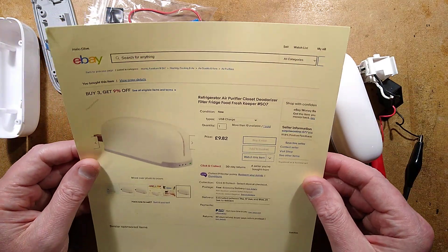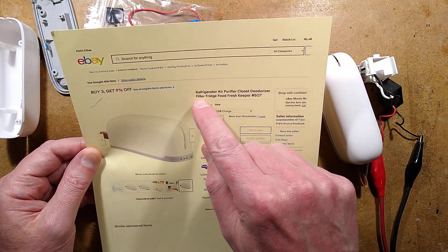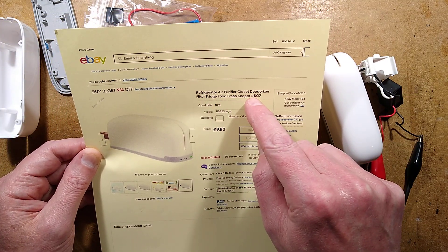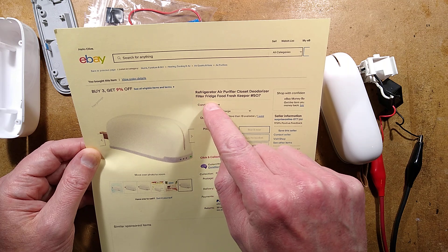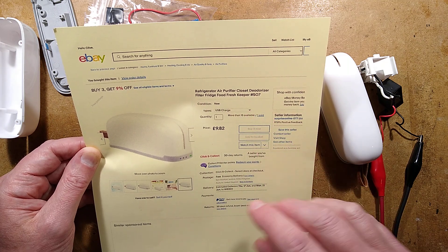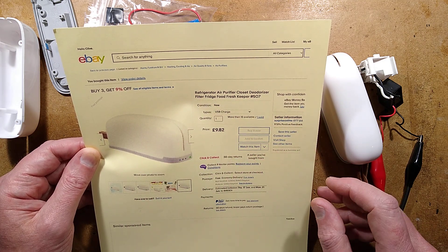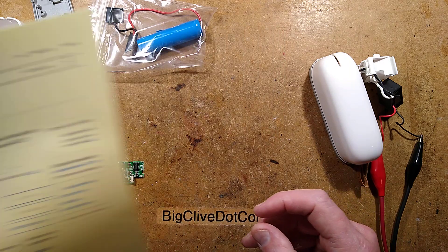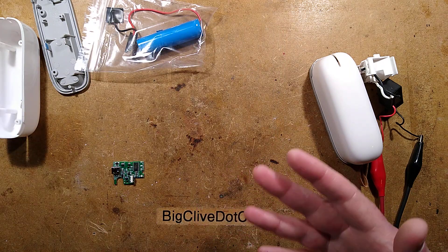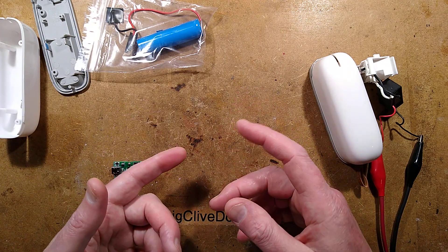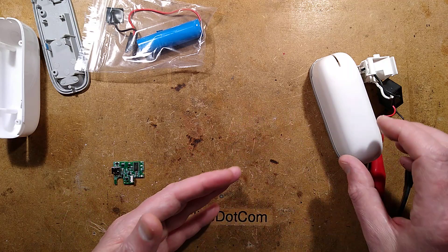Let me show you the listing for these. They're described as Refrigerator Air Purifier, Closet Deodorizer, Filter, Fridge Food Fresh Keeper, and they're all over the internet. If you do a search for Refrigerator Air Purifier or Refrigerator or Fridge Ozone, you'll find these things on both eBay and Aliexpress.